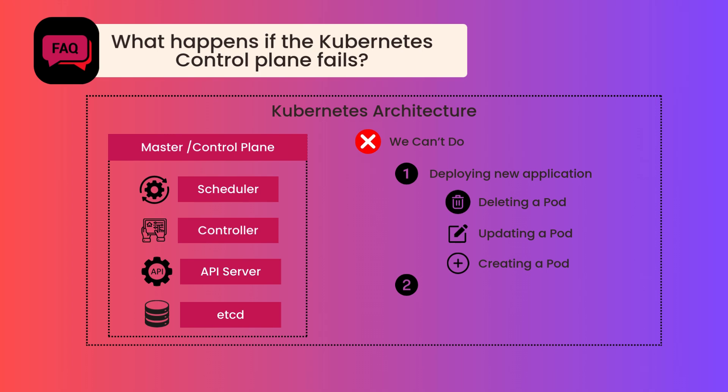Let's say an existing pod is failing for some reason. Kubernetes has a feature of auto-healing, but this happens only if the control plane is up. Such things will not happen if the control plane is down — that is, your master is down. Even horizontal pod auto-scaling will not work. In horizontal pod auto-scaling, if traffic is increasing, we want to increase the number of pod replicas. This happens via the control plane. Because master is not there, even horizontal pod auto-scaling will not function.